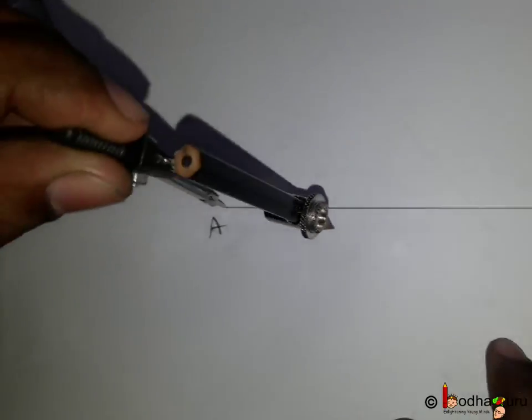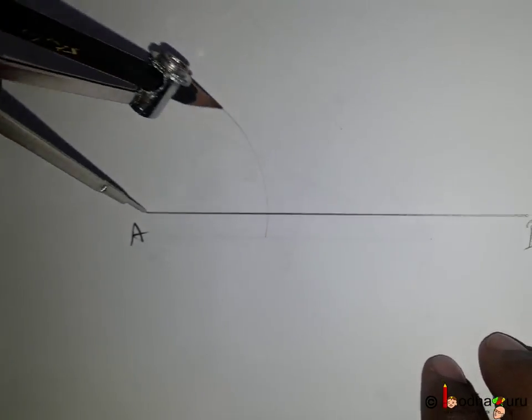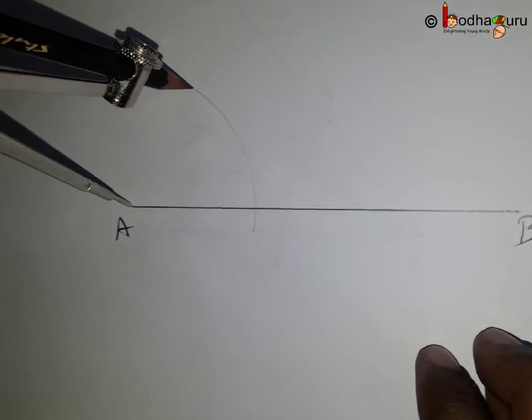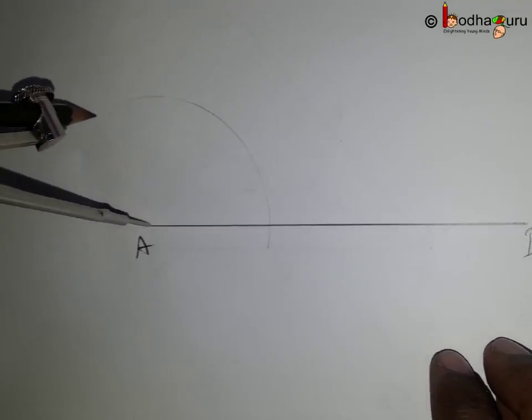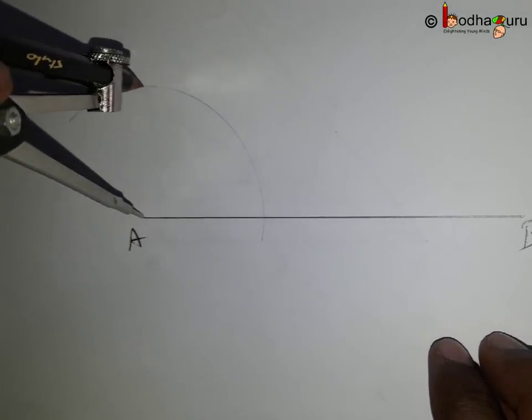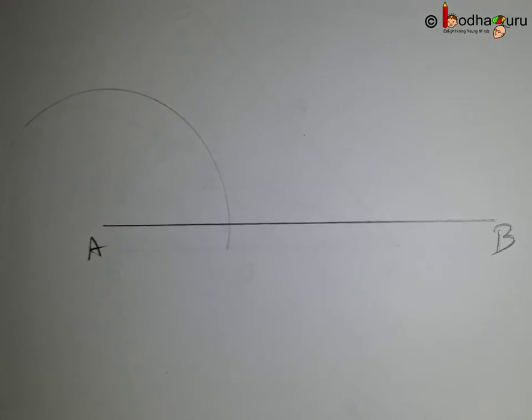Now, put the needle of the compass on point A and draw an arc. This arc intersects the line segment AB at some point, say point O.